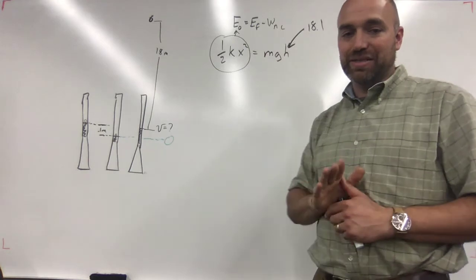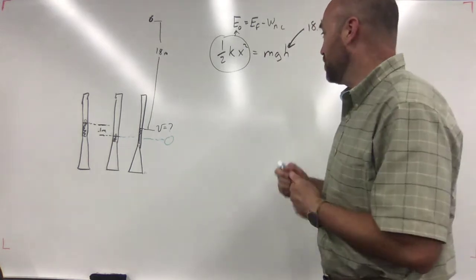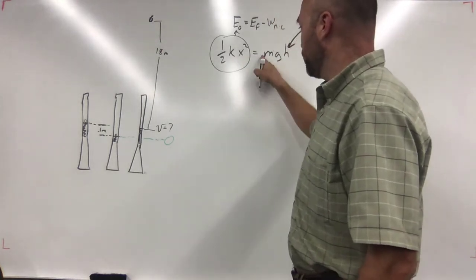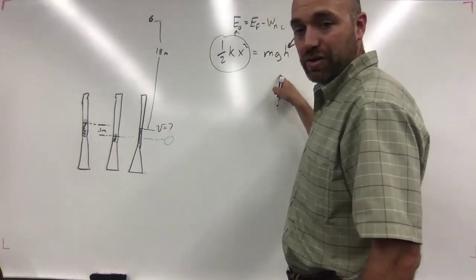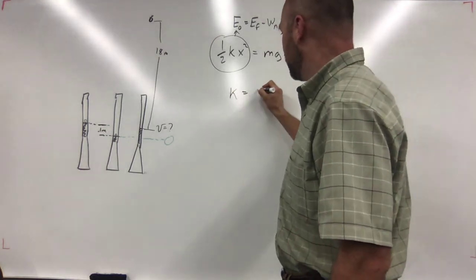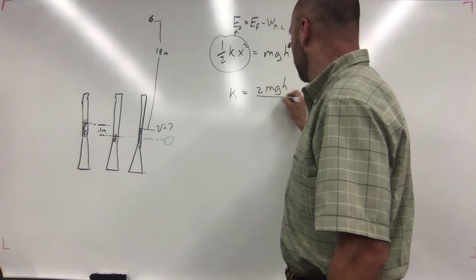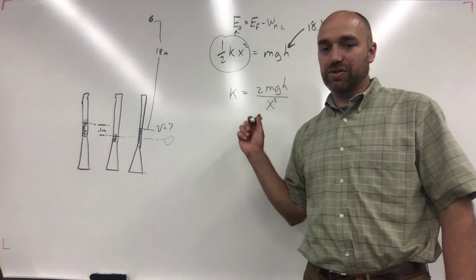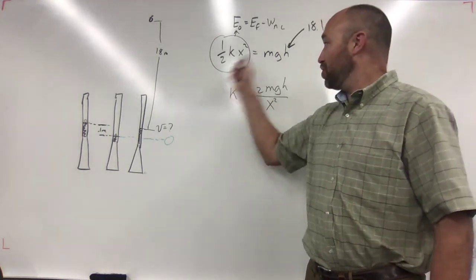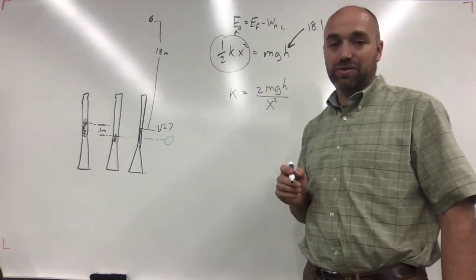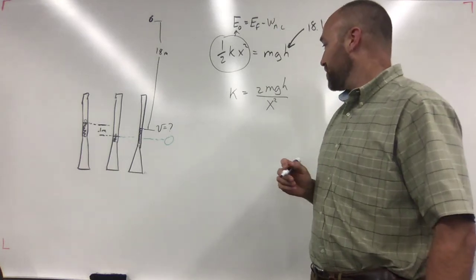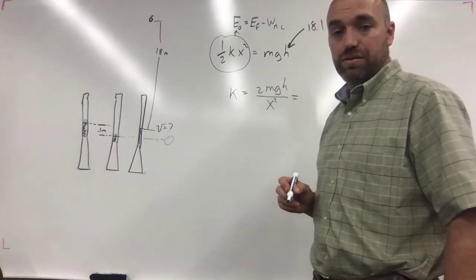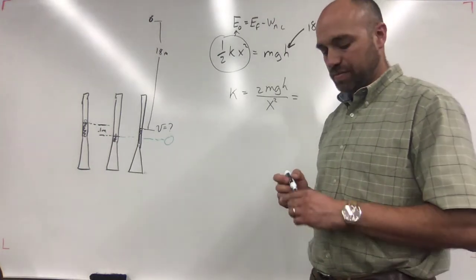Does that make sense how that works? Yes. When you plug these numbers in, I multiply 2 over and divide the x squared down, so I get k equals 2mgh over x squared. And you plug everything in — what do you get for k with your numbers?